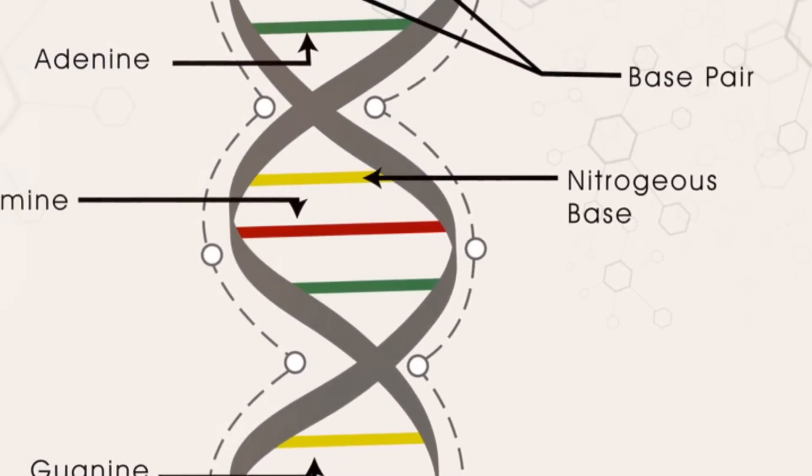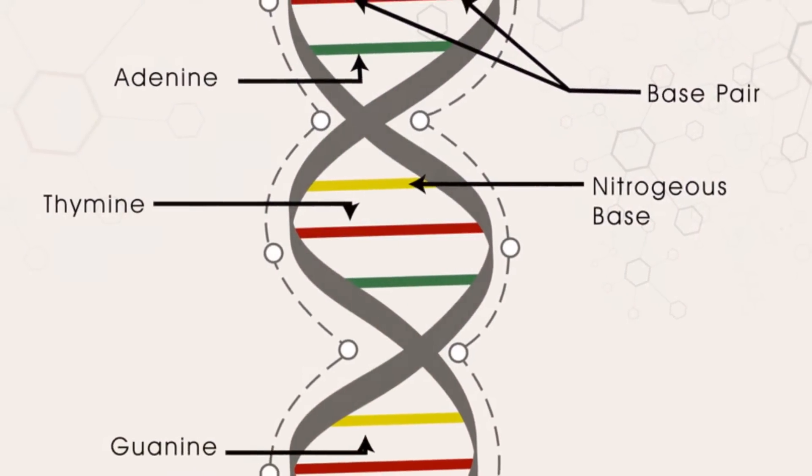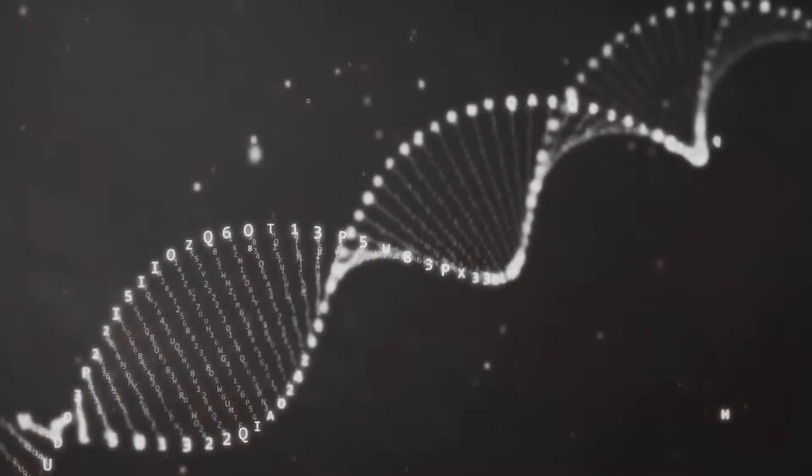There are four different bases: adenine, thymine, guanine, and cytosine. These bases are like the letters of the genetic alphabet.